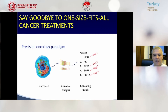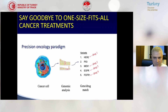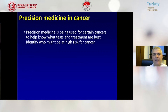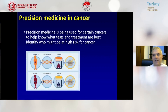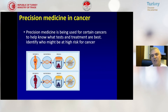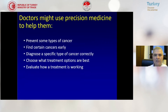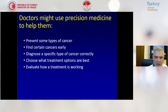Even a single cancer cell can be tested with genomic analysis, and we can identify different variants like HER2, P53, MEK1, EGFR, or FGFR1. We have many drugs specifically targeting these mutations. Precision medicine in cancer is used to help identify who might be at high risk, so patient A with mutation A can be treated with drug A, patient B with mutation B with drug B. Doctors might use precision medicine to prevent some cancers, find cancers early, diagnose a specific type correctly, choose the best treatment options, and evaluate how treatment is working.